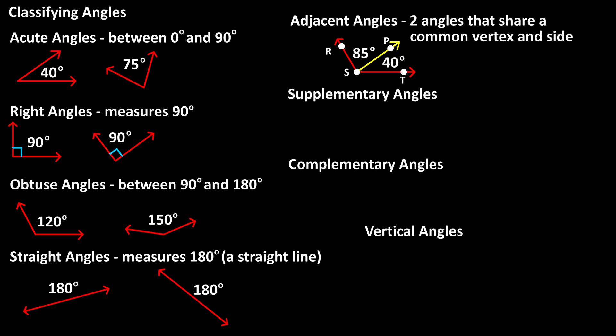Adjacent angles are two angles that share a common vertex and side. In this diagram, angle RSP and angle PST are adjacent angles, as they share a common vertex and a common side.